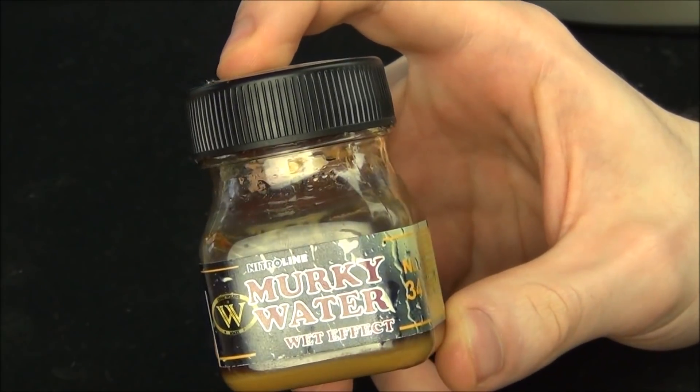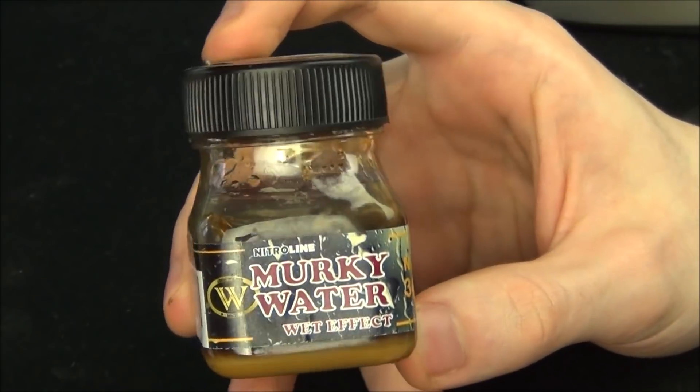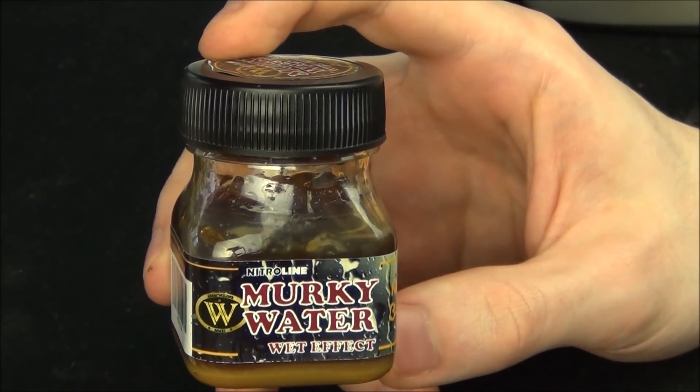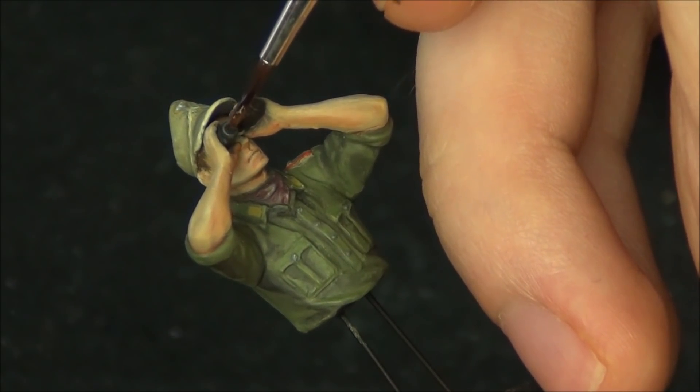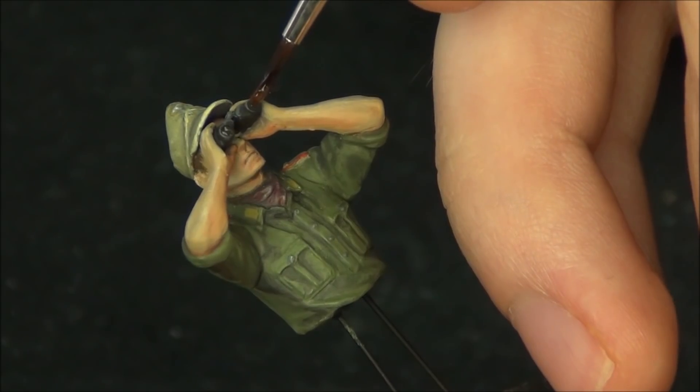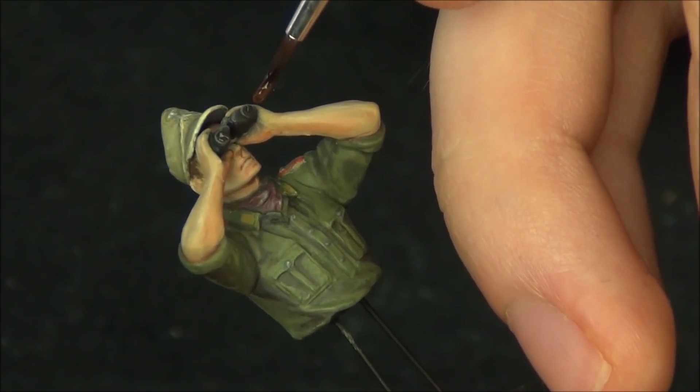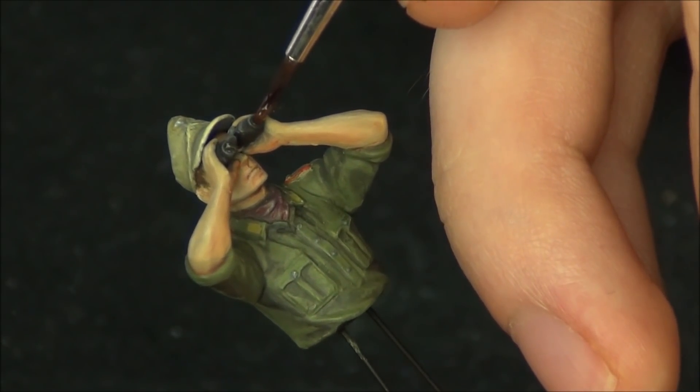For the last detail I'm going to use Wilder Murky Water which is an enamel gloss varnish. I'm going to take a little bit of it and apply it into the lenses of his binoculars. Just a small drop and this will dry and give us a nice glassy sheen.